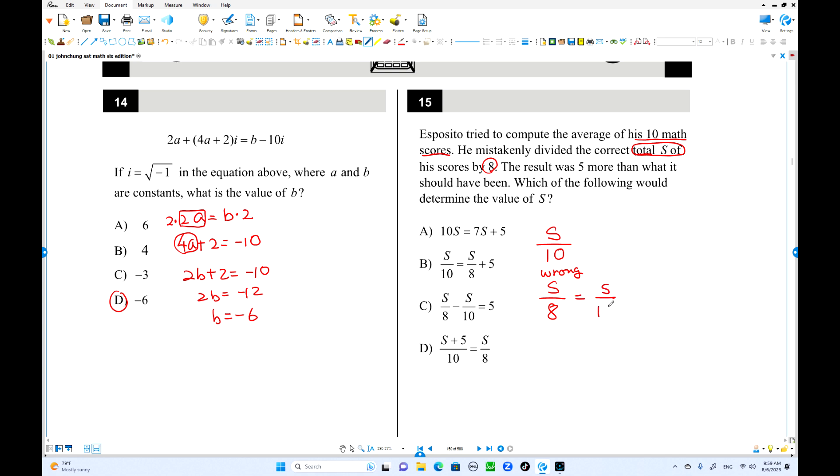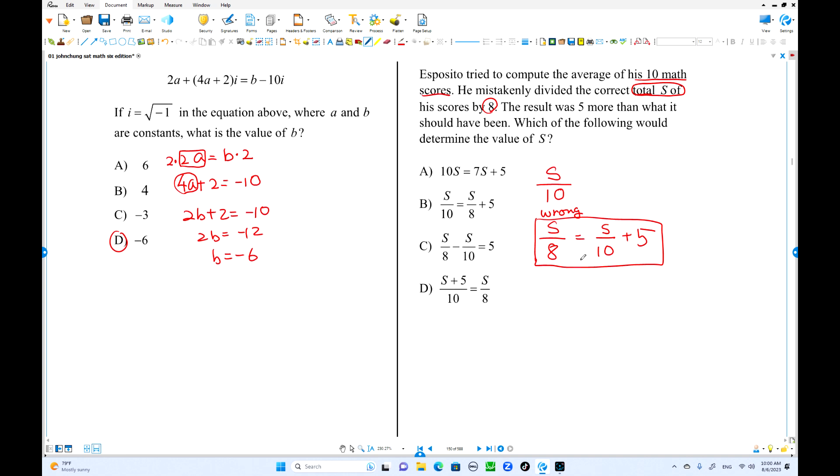You should have this one, S over 10. 5 more. That's the equation. For me, we can find the value of S, but we don't have to. Just write which one is equivalent to this equation. We already have this equation equivalent. Move to the left. That is negative S over 10. Choice C is the answer.